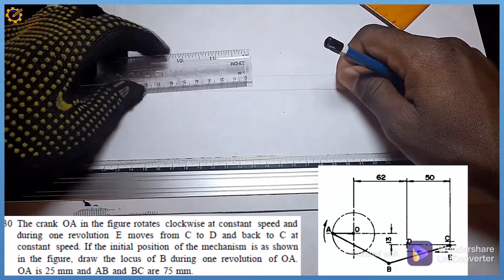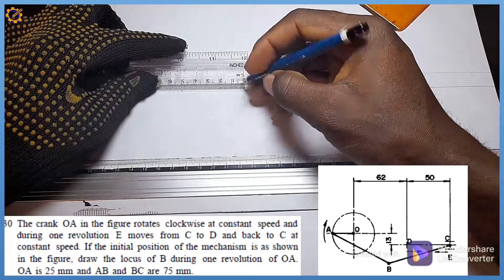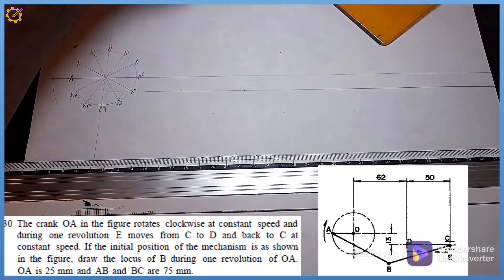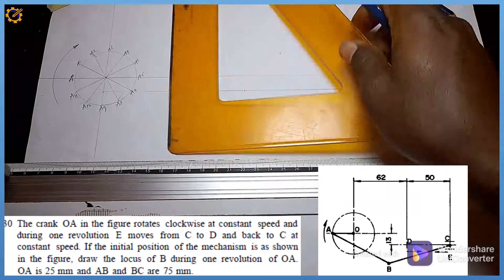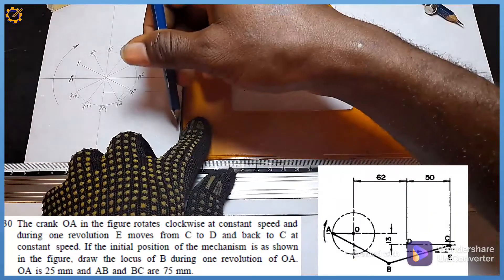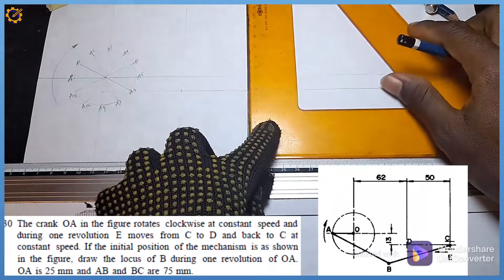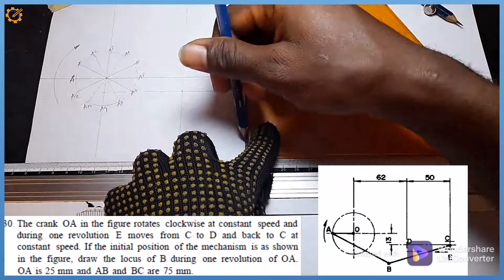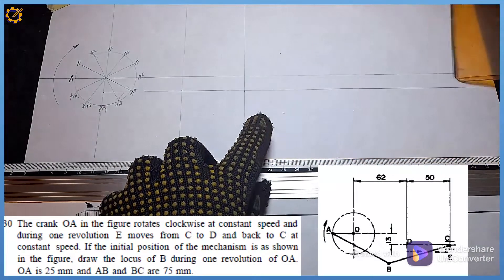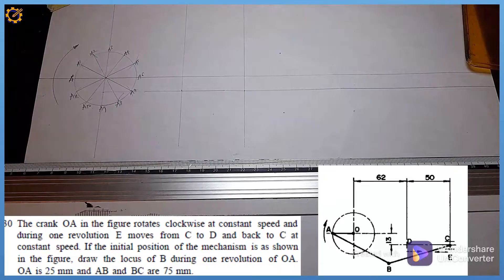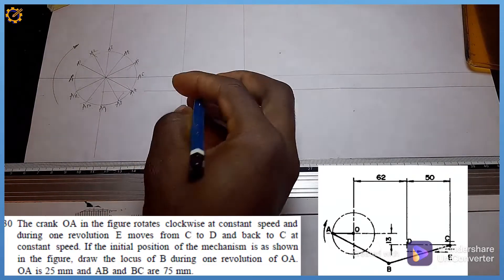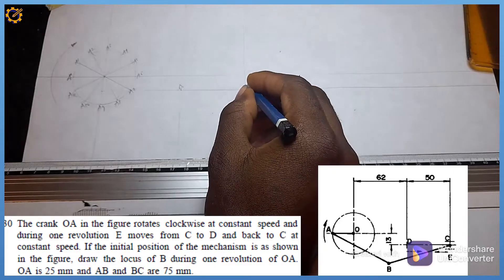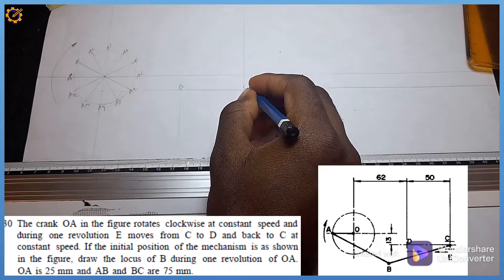Those two marks — 62 and 50 — are projected vertically upward to the horizontal line drawn at 13mm. The first projected mark becomes point D, and the second becomes point C.